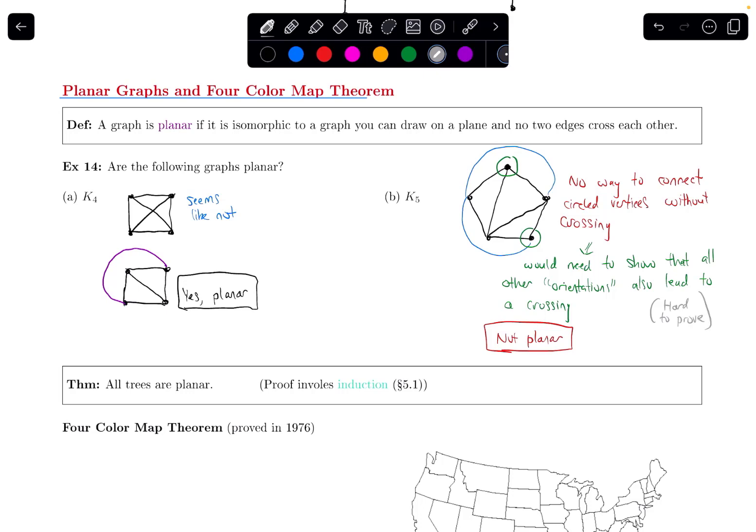So for our purposes, I want us to just be able to test it out by drawing several different variations like this, and really trying to convince ourselves either that it's doable, like it was here, or like something like this, and being able to convince ourselves that it's not planar.